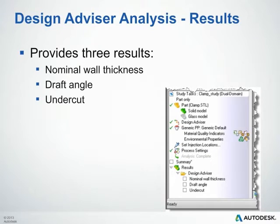Design Advisor will offer you three specific results: the nominal wall thickness result, a draft angle result, as well as an undercut result. We'll take a closer look at these a little later.